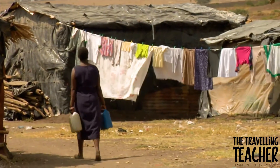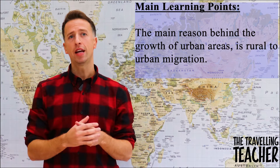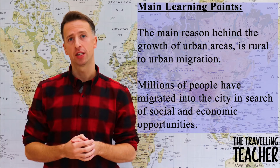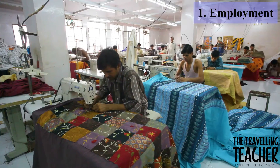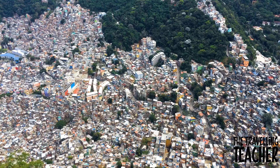Before we look at the challenges of the squatter settlements in Rio, it is first important to understand why the favelas have grown so rapidly over the past 50 years. The main reason behind the growth is rural to urban migration, where millions of people have migrated into the city in search of social and economic opportunities such as employment, education or healthcare. Once people arrive, they build their home within the growing illegal settlements which are scattered across the city.